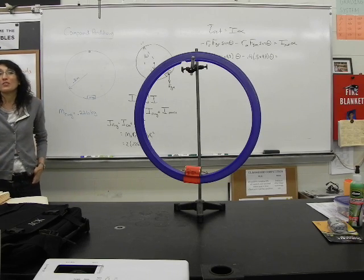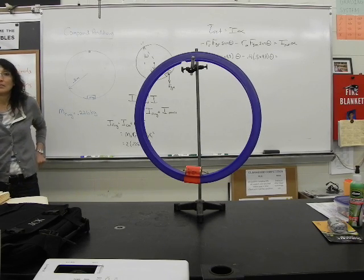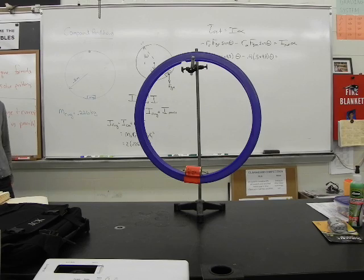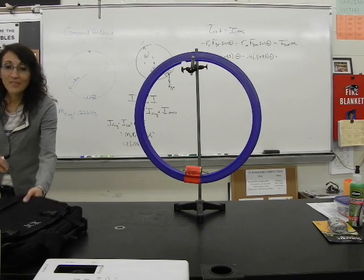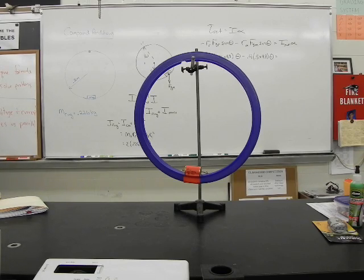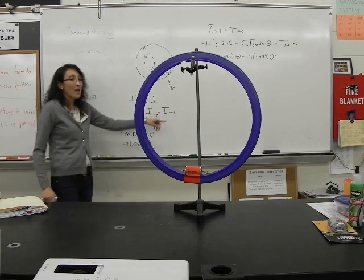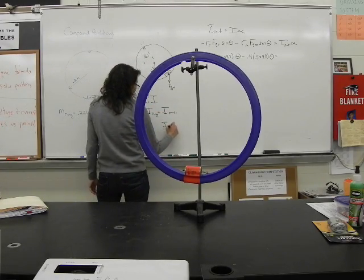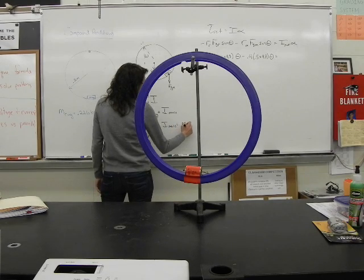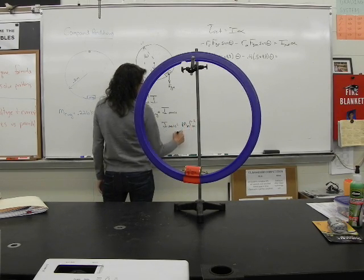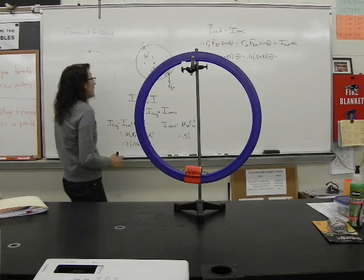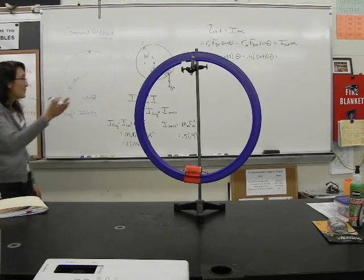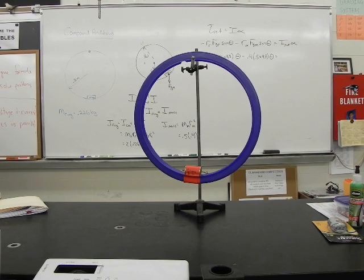What about the I of the mass? What are we going to treat it as? We're going to just treat it as point mass, right? The I of the mass is just going to be the m of the mass times the r of the mass squared. So that's going to be 0.5 multiplied by 0.4 squared. All right, so add all that up and what does our total I come out to be? I need my calculator.